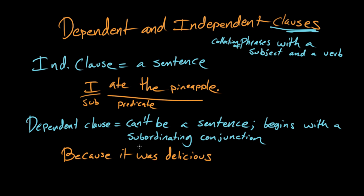So because it was delicious, not a sentence. This is a dependent clause because it begins with this subordinating conjunction because. You could also work in something like although or while. And any of these would make it a dependent clause.